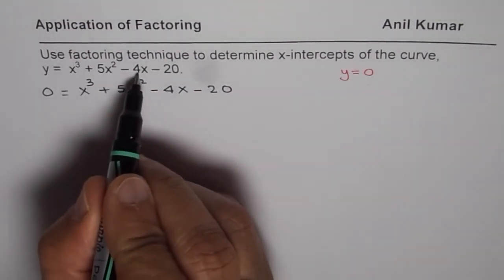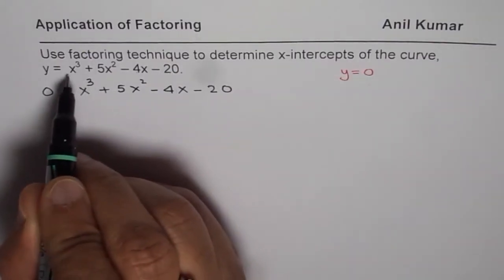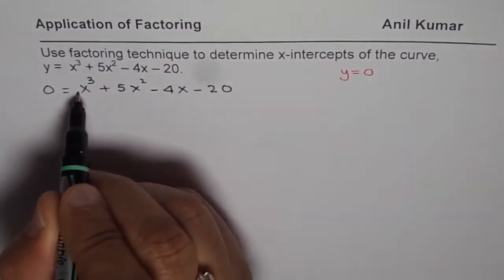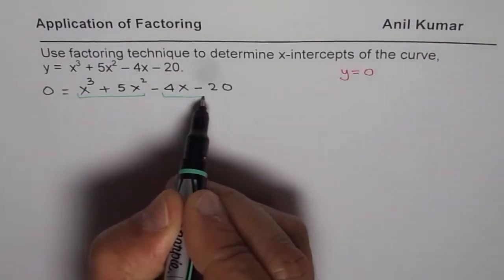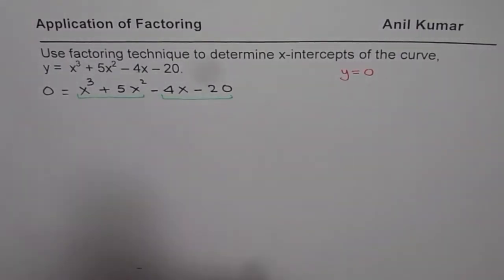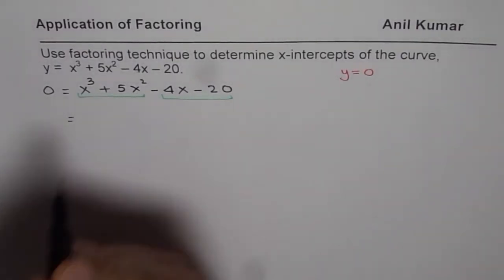In this case, because this ratio is 4 times 5 is 20, 1 times 5 is 5, factor by grouping helps us to factor this particular equation. So, if I group first two together,